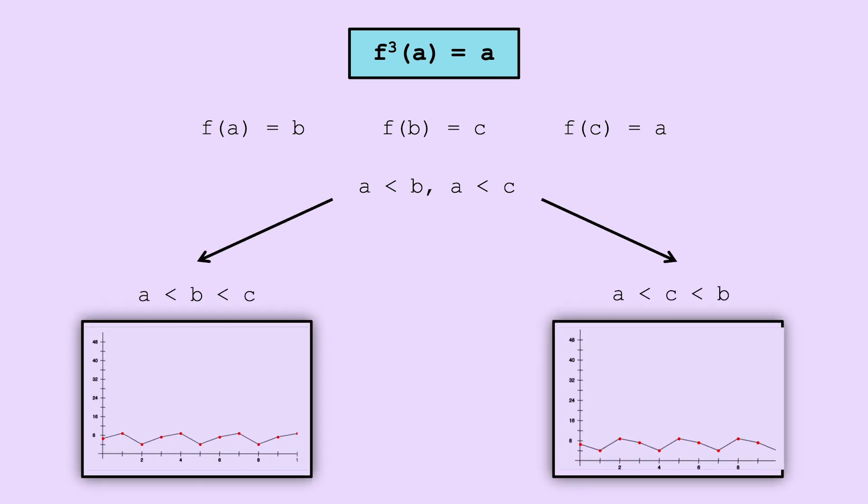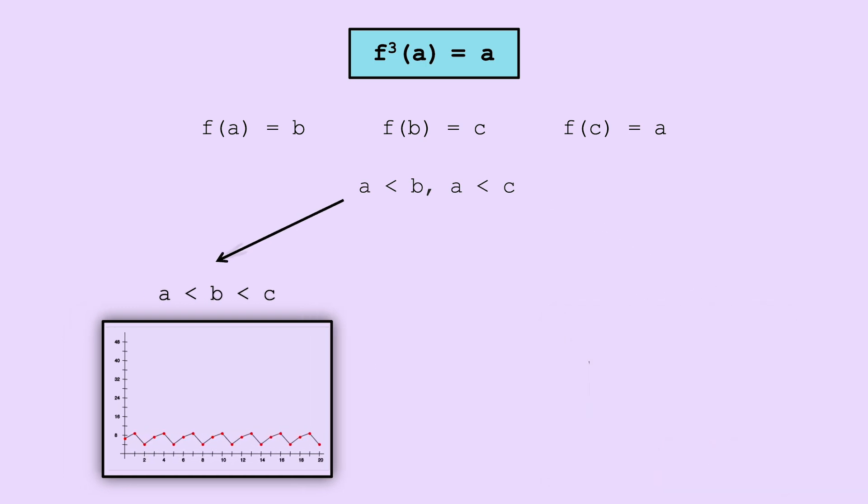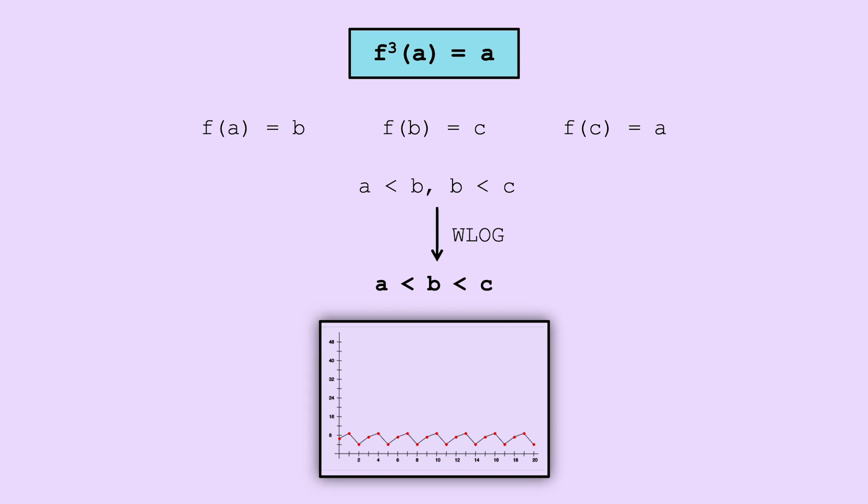Let's call the point with period 3, a, and f of a equals b, f of b equals c, and f of c equals a. It's pretty easy to show that all of a, b, and c have period 3. So since we picked a arbitrarily, we'll assume that a is actually the smallest of these three numbers. This makes it so we now only have two cases. However, these cases are symmetric, and the proofs would be nearly identical. So let's just assume, without loss of generality, that a is less than b is less than c.